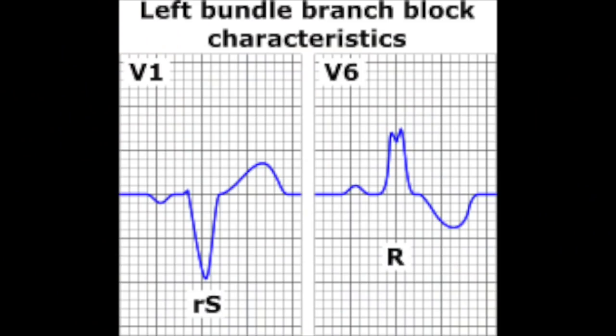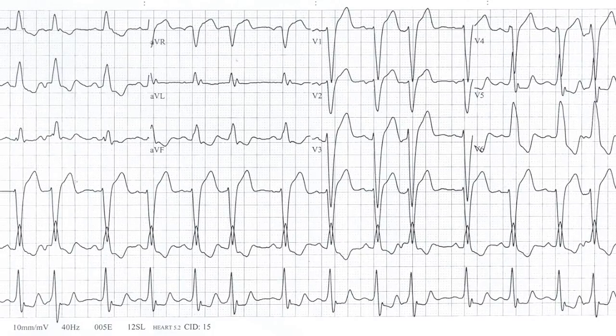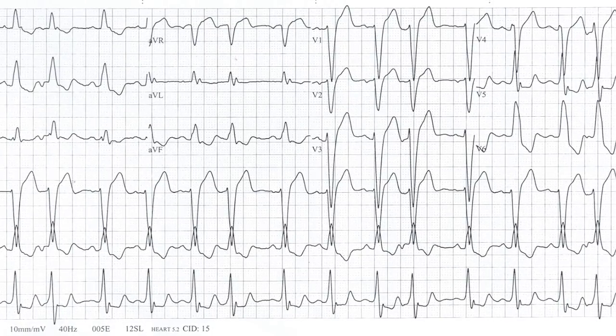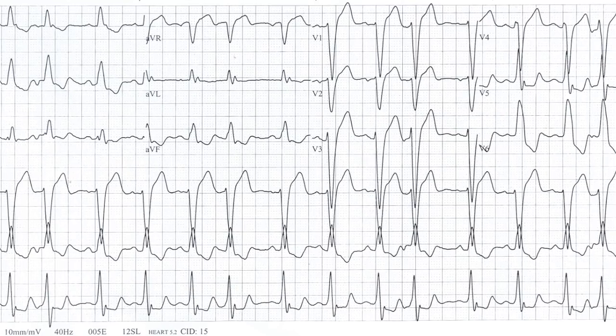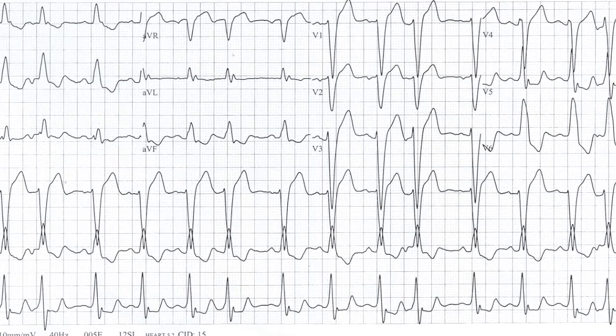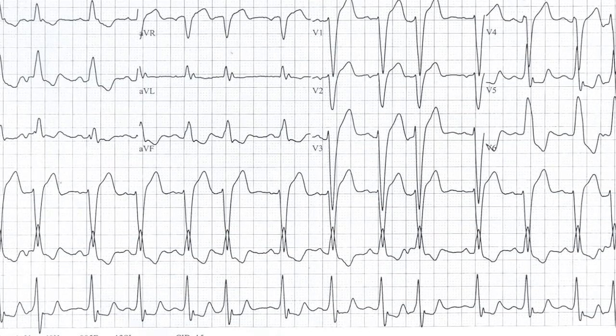Some common things you'll see with a left bundle branch block are in V1 and V6. In V6, you will see the two bunny ears, which make a wide QRS greater than 120 milliseconds. In V1, you'll see a little R and a huge S. This is a great example of a left bundle branch block — you see the bunny ears in V6, the huge S in V1, and widened QRSs in many of the other leads. But you can also see some ST elevations as well, which can be confusing.